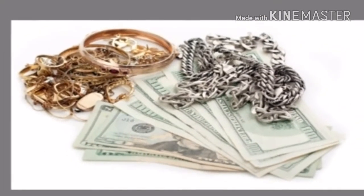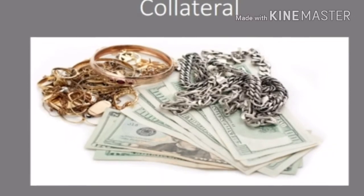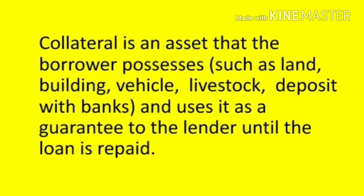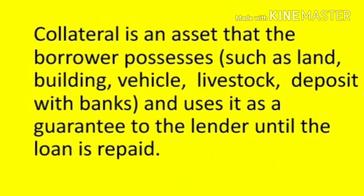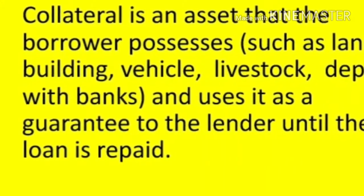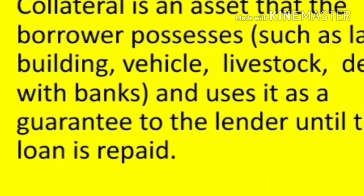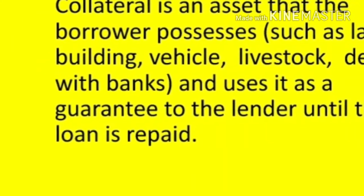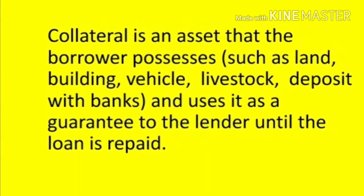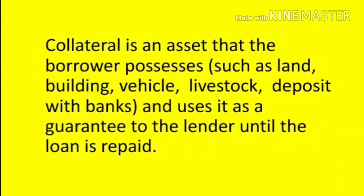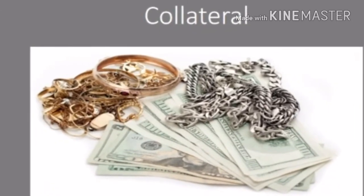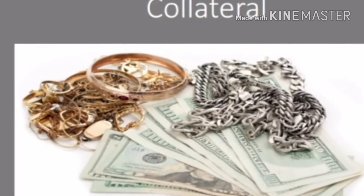Our first point is collateral. Collateral is an asset that the borrower possesses, such as land, building, vehicles, livestock, and deposits with a bank. All these things are used by the borrower as a guarantee to the lender until the loan is repaid. If the borrower fails to repay the loan, the lender has the right to sell the assets or the collateral to obtain the payment.